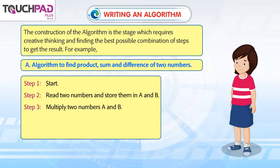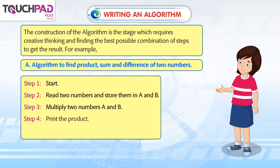Step 3: Multiply two numbers A and B. Step 4: Print the product.